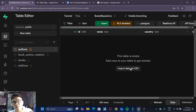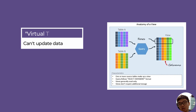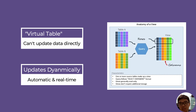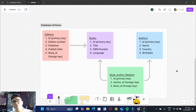One more concept I'd like to introduce in this video is Supabase views. A view is a virtual table created from one or more existing tables. Unlike regular tables, a view doesn't actually store any data — instead, it updates dynamically by fetching data from your existing tables. You can't really edit a view, but whenever the data in its constituent tables is updated, the view is automatically updated as well. A view is a great way to join tables together so you can access the combined data without writing complex SQL queries every time.